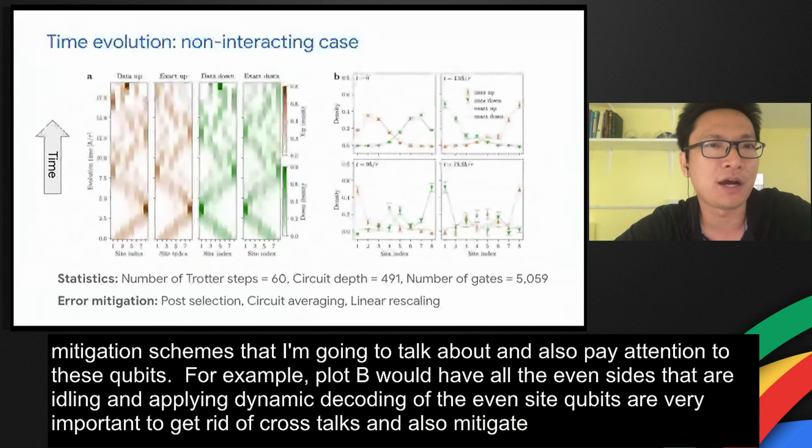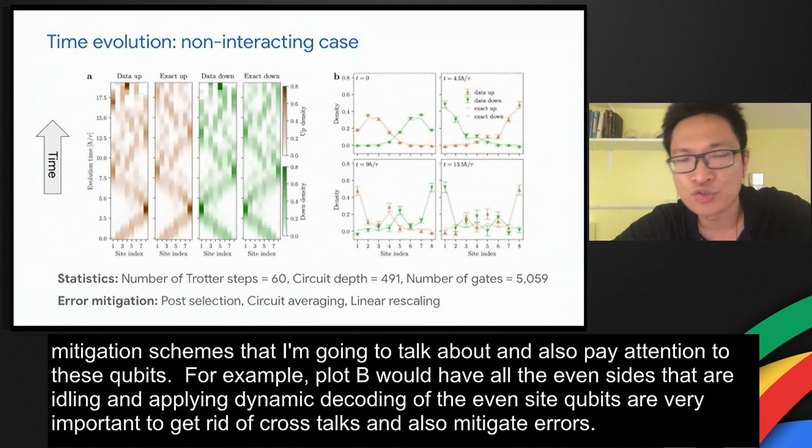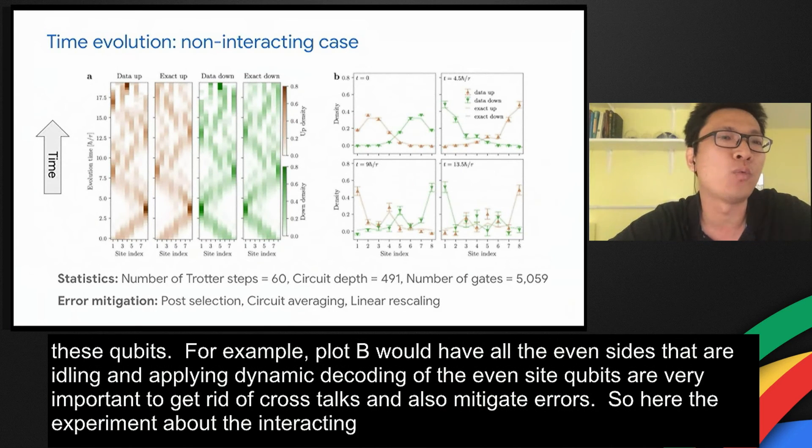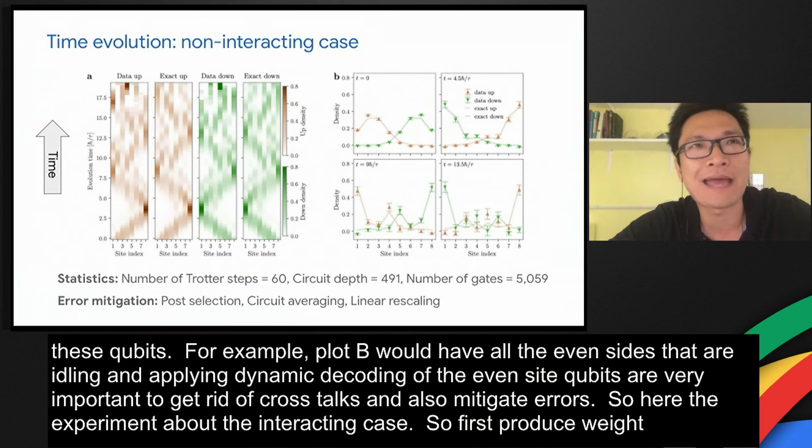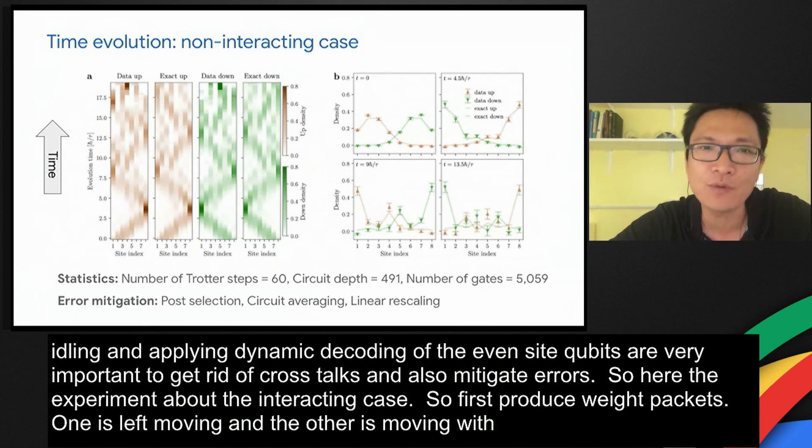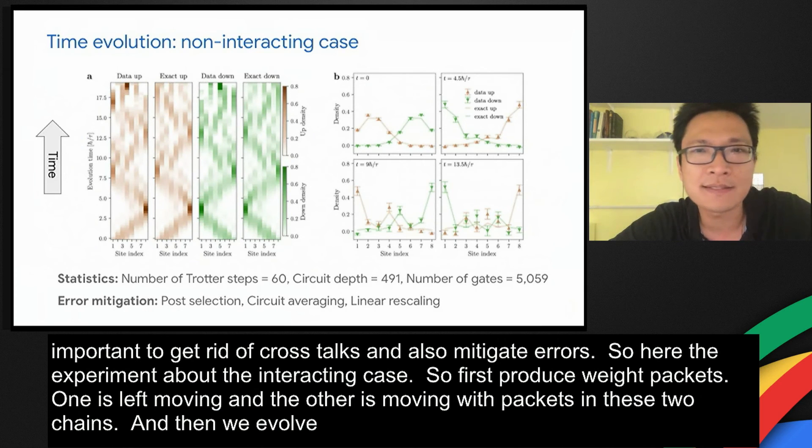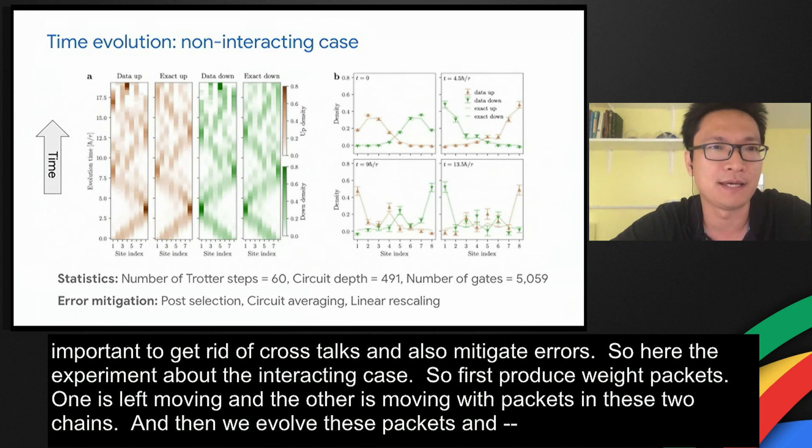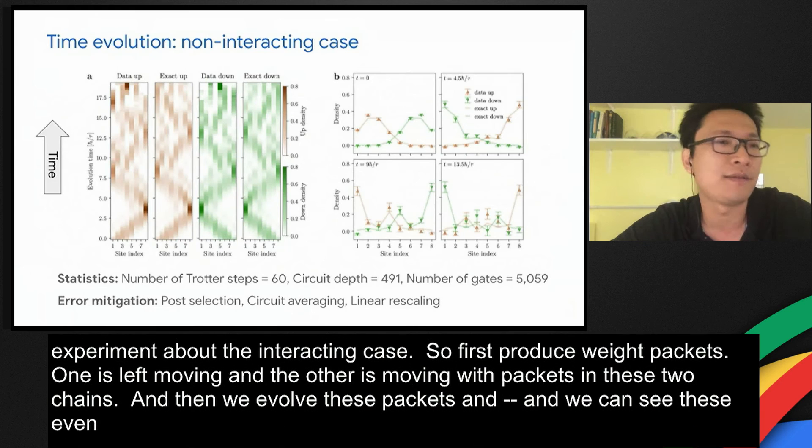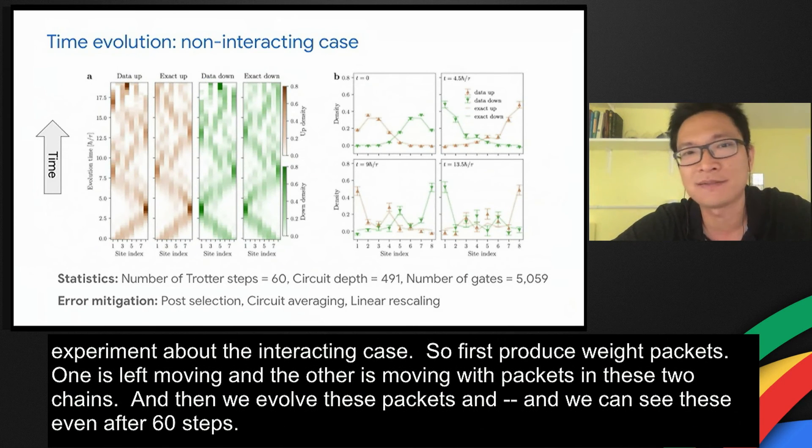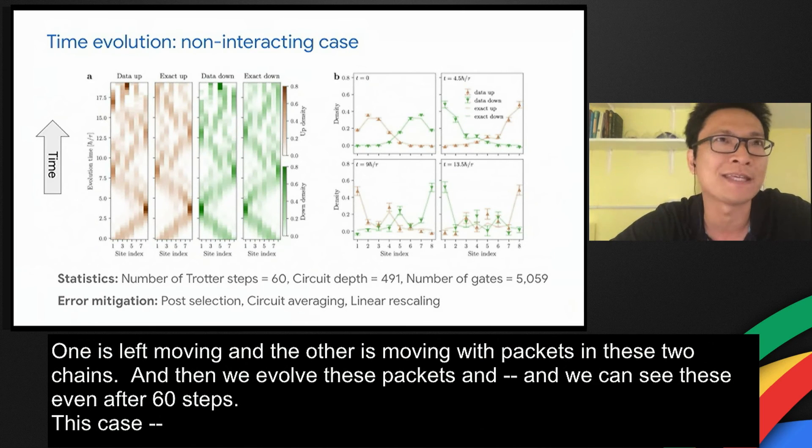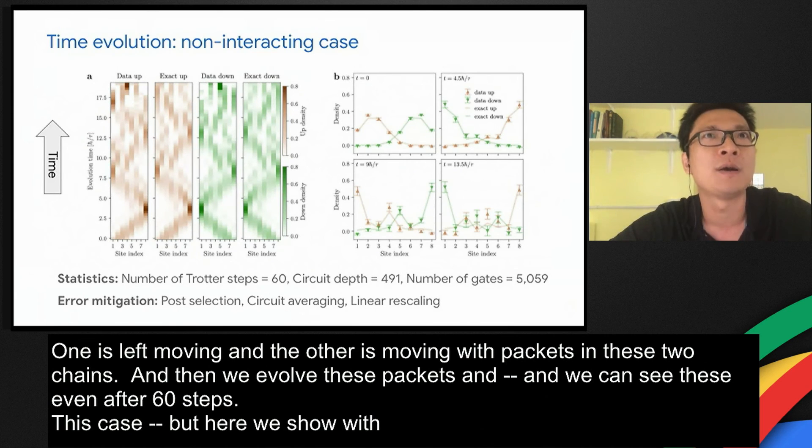Here are some experimental results on the non-interacting case. First, we produce two wave packets. One is left-moving and the other is right-moving wave packets in these two chains. And then we evolve these wave packets in trotterization. And we can see that the wave packets bounce around the boundaries many times. We can see this beautiful interference pattern even after 60 Trotter steps. In this case, the circuit depth is almost 500. Remember, the circuit depth in quantum supremacy is 20. But here, we show with careful error mitigation and calibration, you can go much deeper circuits. Maybe you can do something with these NISQ devices.